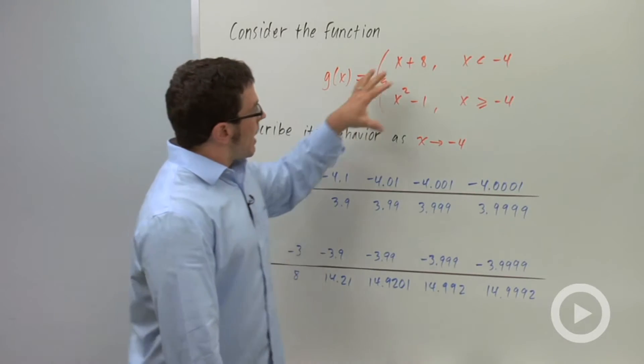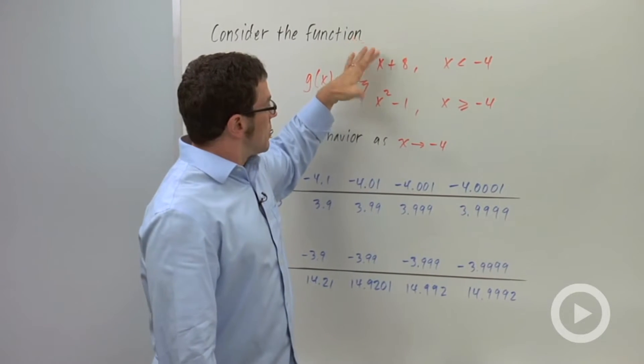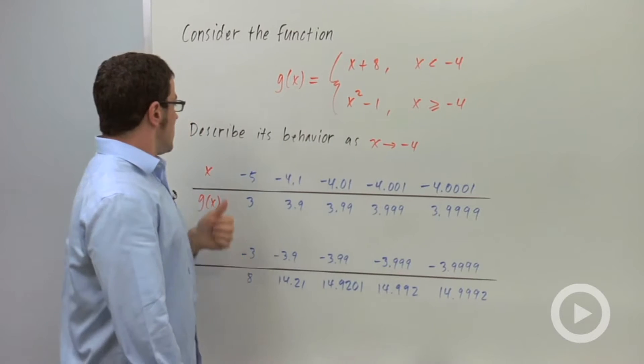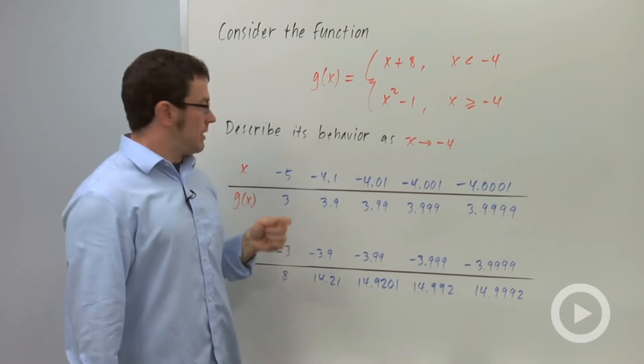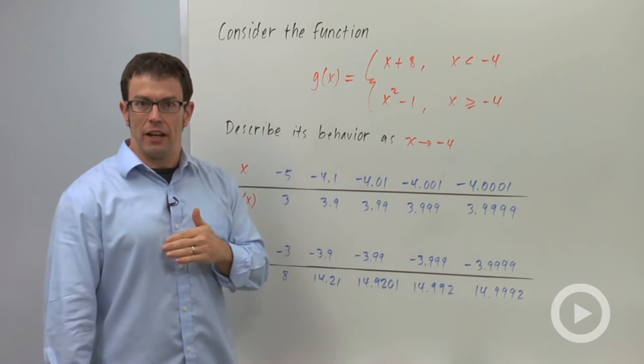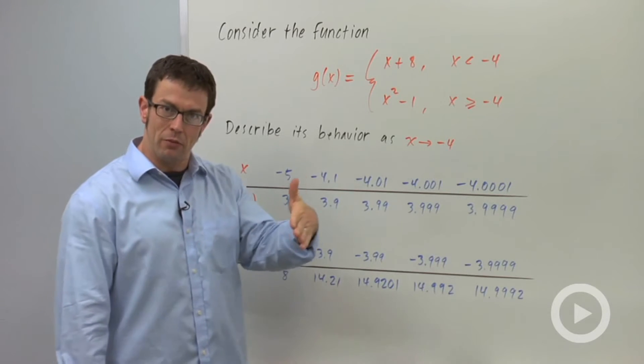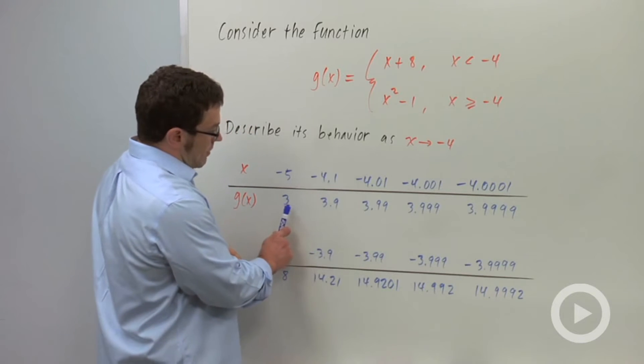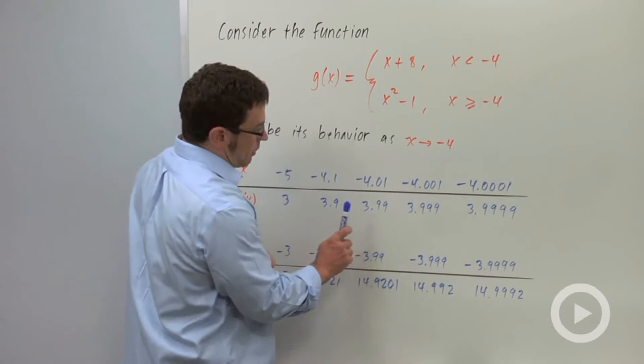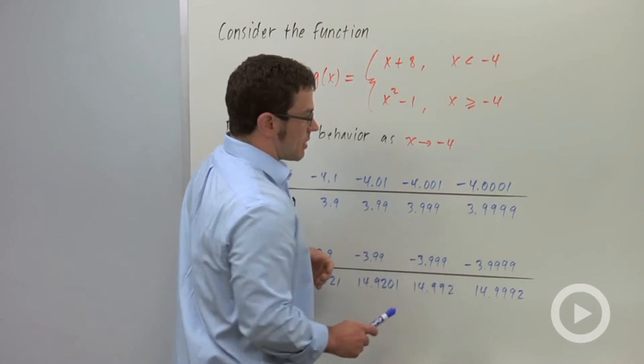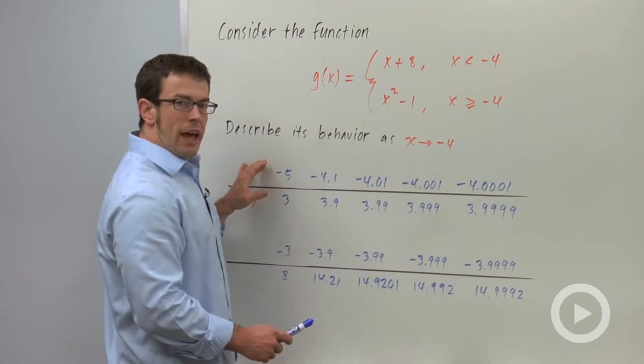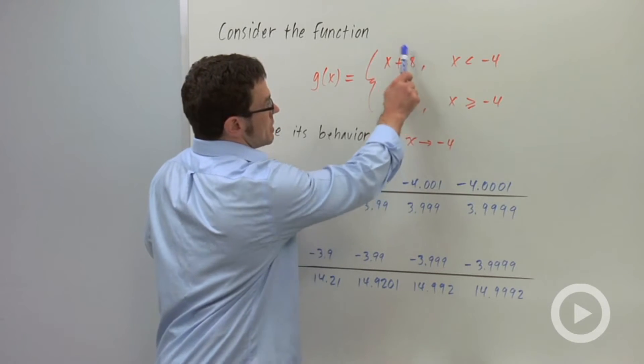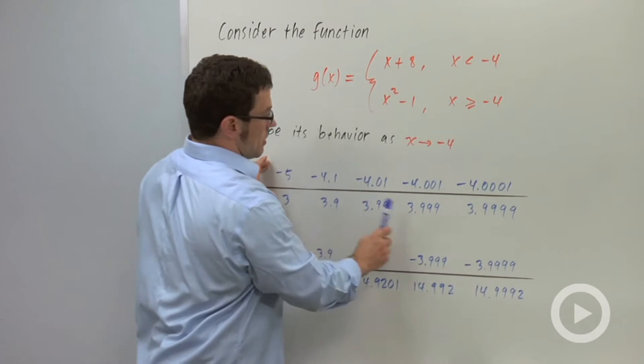Well, at negative 4, that's where the two pieces are joined together, and so it may behave differently depending on what side of negative 4 we're on. So let's try approaching negative 4 from the left. Negative 5 is to the left of negative 4 on the number line, so we're starting from the left and moving to the right. Negative 5, negative 4.1, negative 4.01. Look what happens to the values: we get 3, 3.9, 3.99. These values are getting closer and closer to 4. When x is less than negative 4, we're using this piece of the function, so we're getting closer and closer to the value 4.